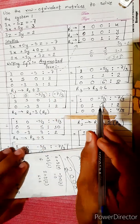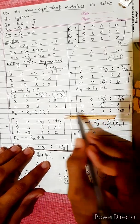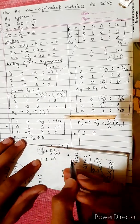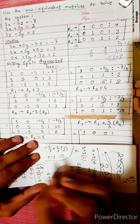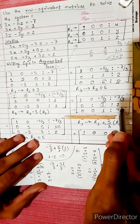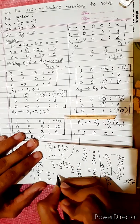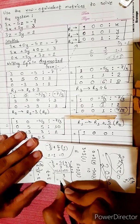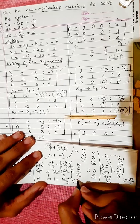Continuing the calculation for R1: -5/3 plus 5/3 times R3 gives 0 in the third column. For the constant: -7/3 plus 5/3 times 4/3 equals -7/3 plus 20/9. Converting -7/3 to ninths gives -21/9 plus 20/9 equals -1/9. So the new R1 is [1, 0, 0 | -1/9].